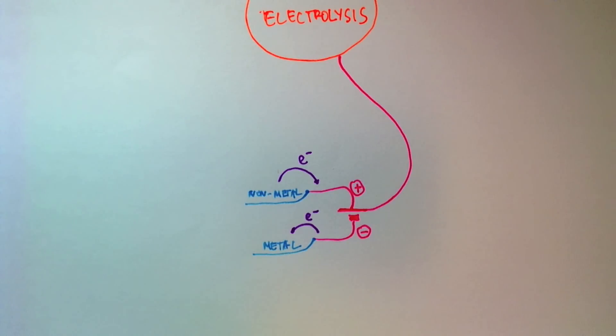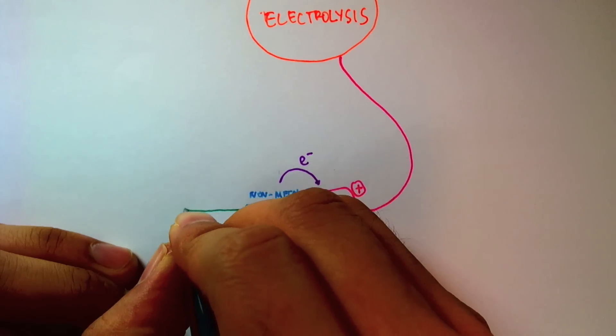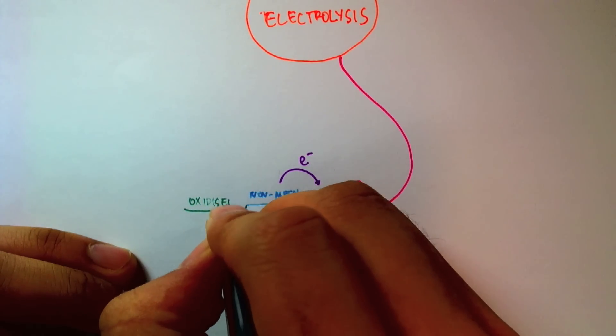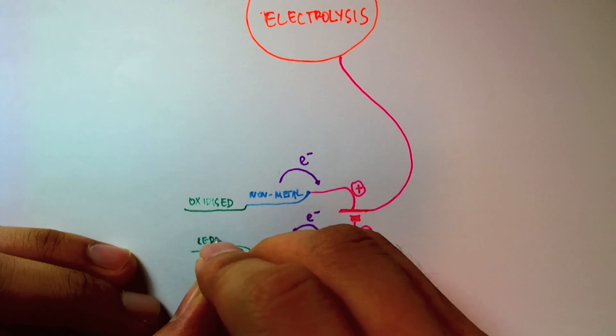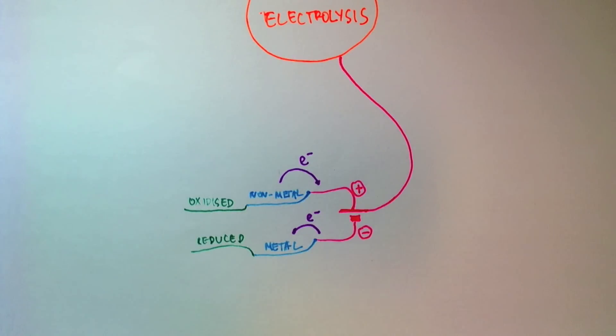And when that happens, we say that the nonmetal is oxidized since it lost electrons, and the metal is reduced because it gained electrons.